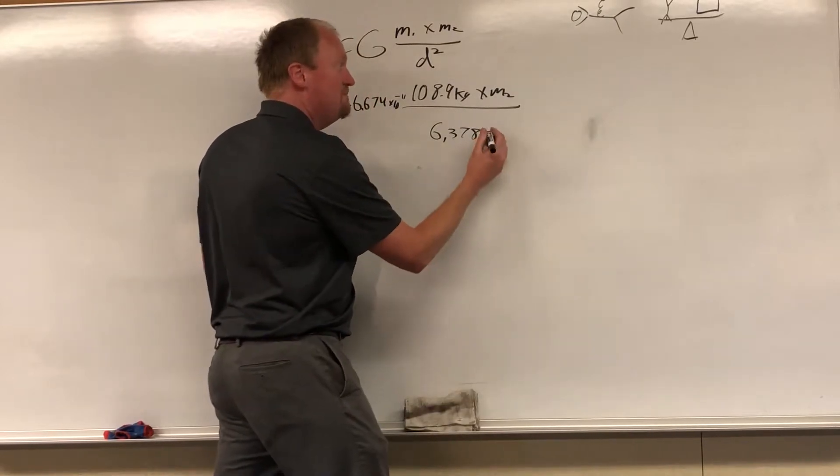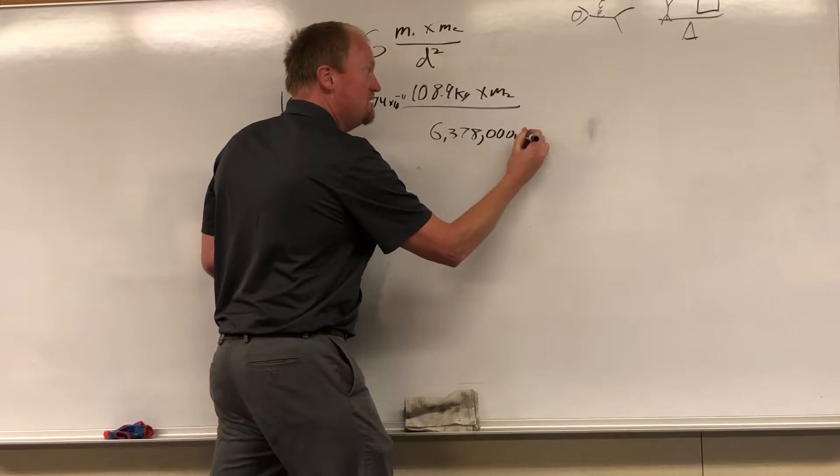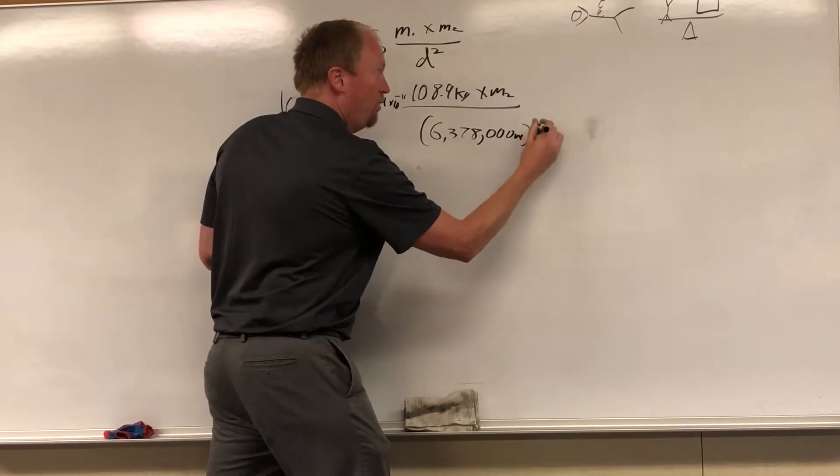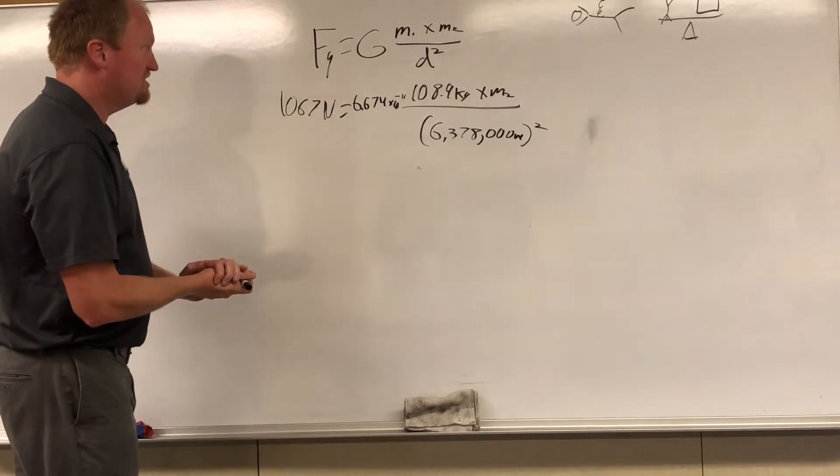Now we need to put everything, so 6378 kilometers is 6,378,000 meters, all squared.